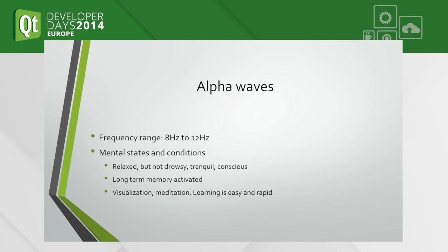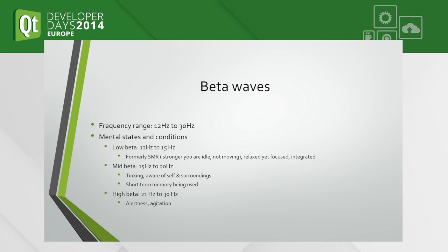Alpha waves — and this is the reason why I use the fast Fourier transform, because of their frequency — are involved when you are in meditation or for long-term memory. Beta waves are the most interesting from my point of view for this project, because they are most involved when you are thinking about something.